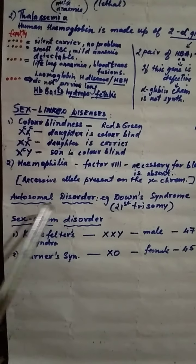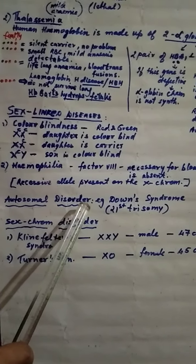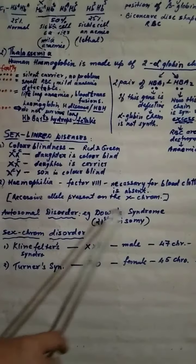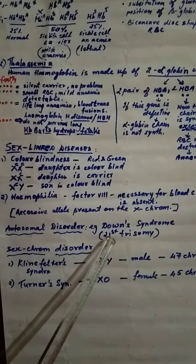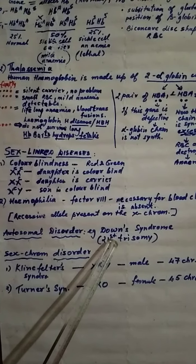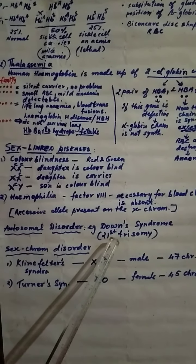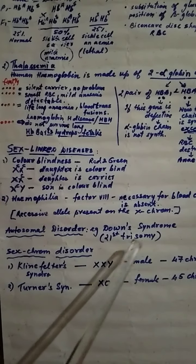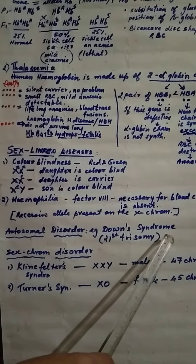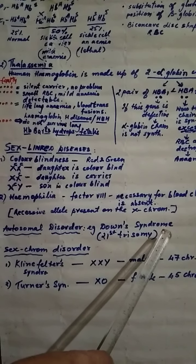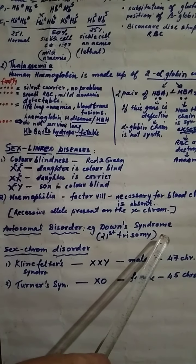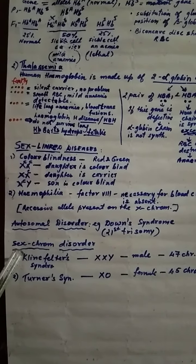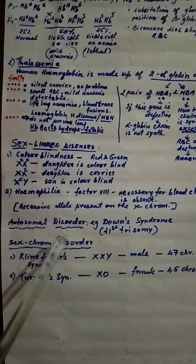Next is autosomal disorder. This example you should know, Down syndrome. In this Down syndrome 21st chromosome is not paired but it is having one extra chromosome, so it is called trisomy. Here you have to write 5 symptoms of the Down syndrome child which is born, like moon shaped face, tongue protruding, mentally retarded etc.